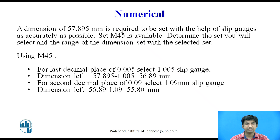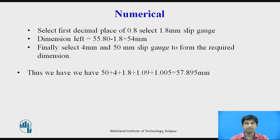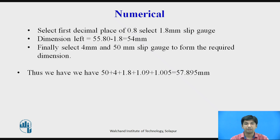Deducting from the previous remainder: 56.89 − 1.09 = 55.80 mm. Moving to the first decimal place, the value is 0.8, so select the 1.8 mm slip gauge. Dimension left: 55.80 − 1.8 = 54 mm. Finally, select 4 mm and 50 mm slip gauges to form the required dimension.